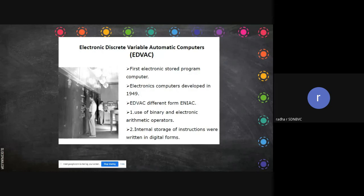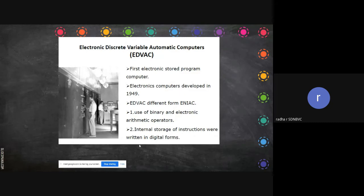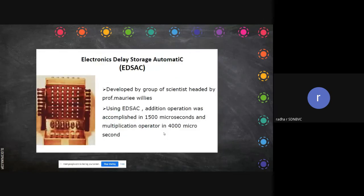By the name binary itself - it means zero and one, only two numbers. Even all the big decimal numbers can be represented with binary representation just using zero and one. EDVAC used binary and electronic arithmetic operators; internal storage of instructions was introduced, and we call those stored items instructions. Then comes EDSAC - the Electronic Delay Storage Automatic Calculator - developed by scientists headed by Professor Maurice Wilkes. Its addition operation was accomplished in 1500 microseconds, faster than the previous, and multiplication in 4000 microseconds.